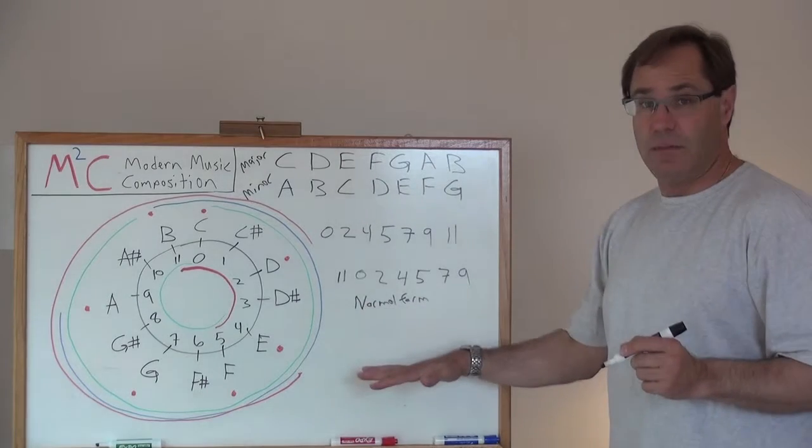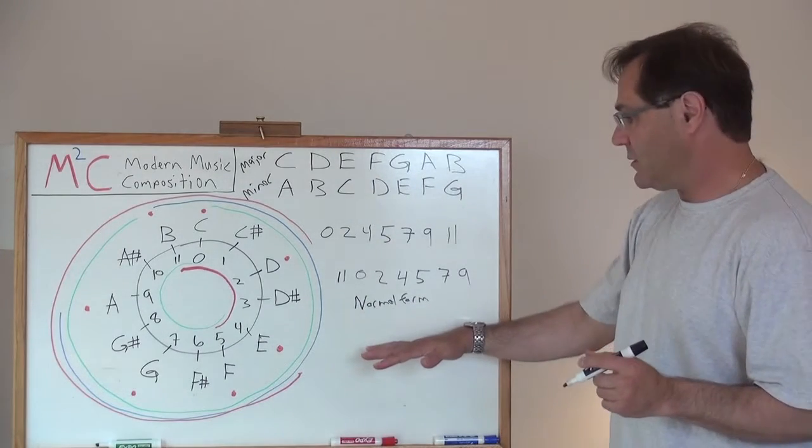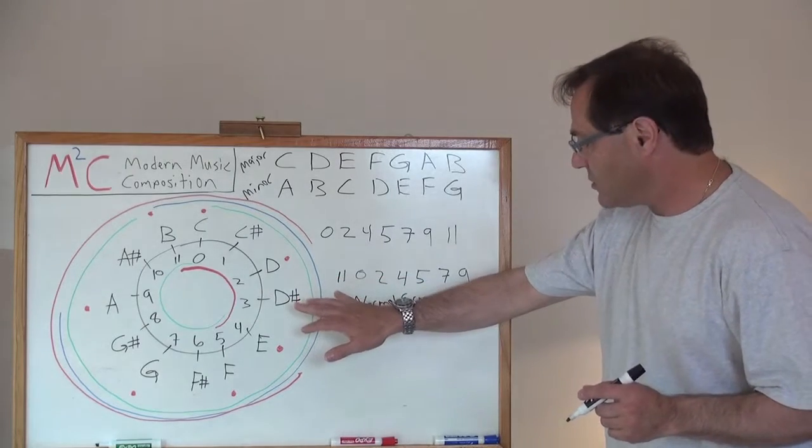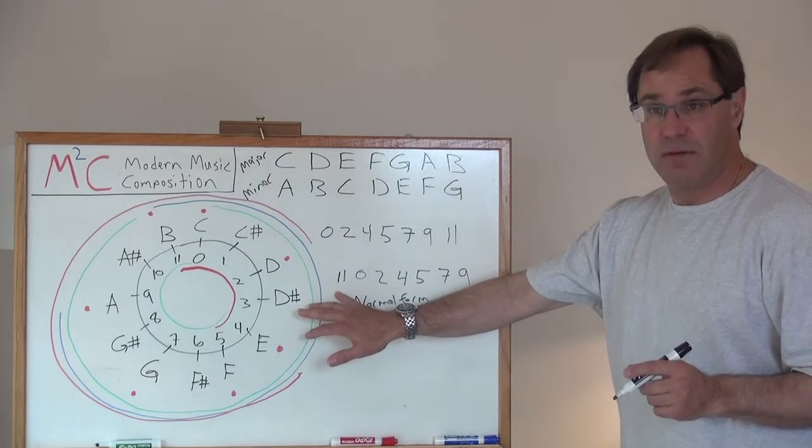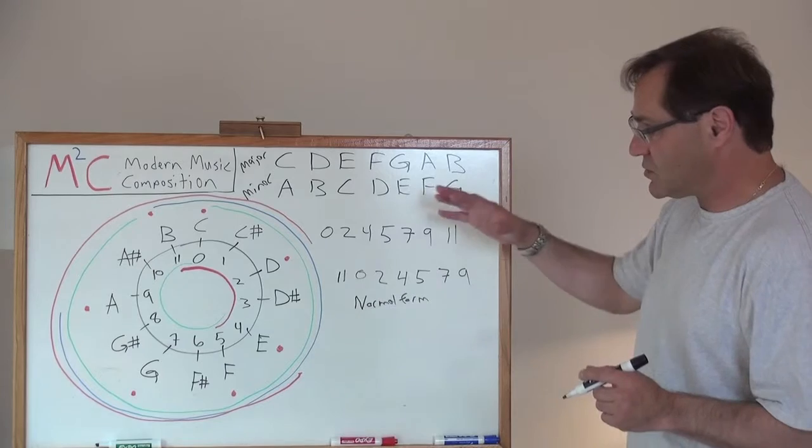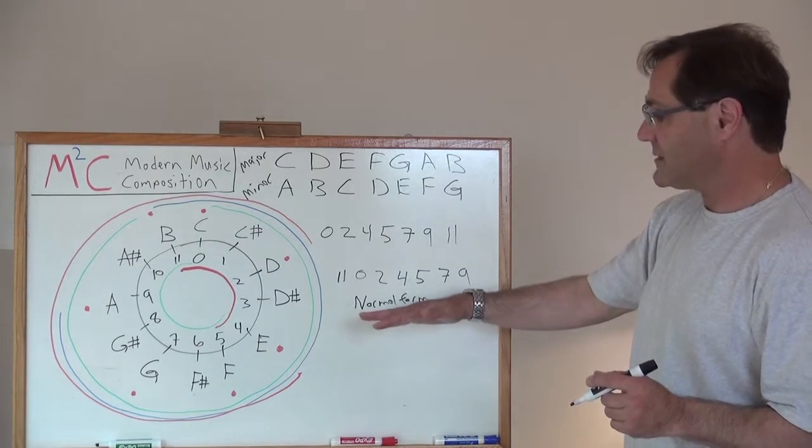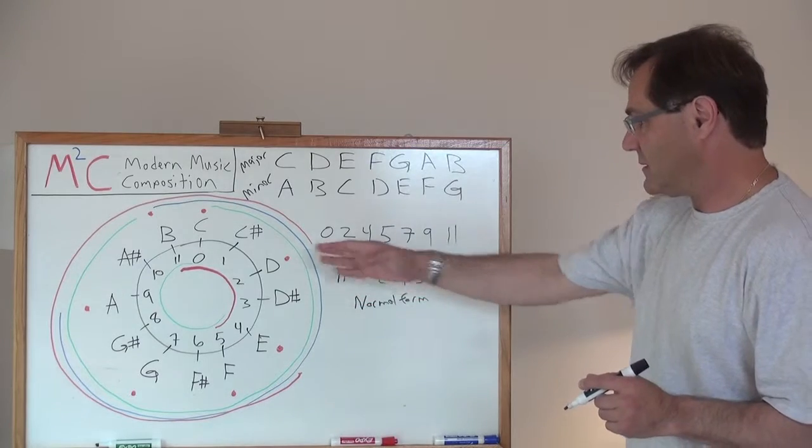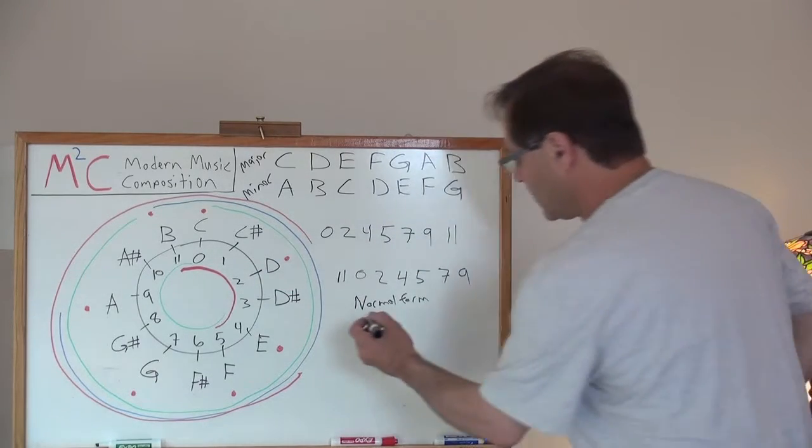Now, we want to put it into prime form. The only thing we really need to do at this point is now make sure that we start with a zero. That means that we need to now just transpose, in this case, up one semitone so that 11 becomes a zero. So then let's just do that.